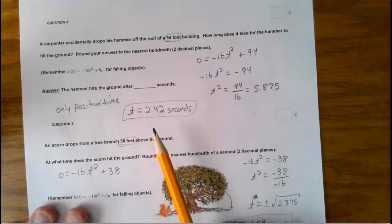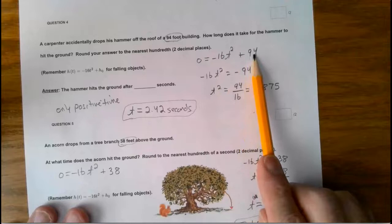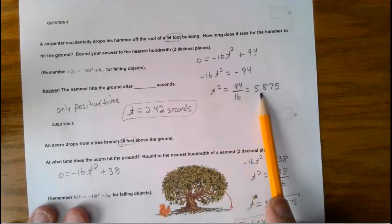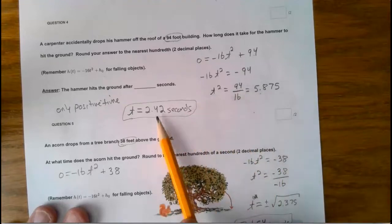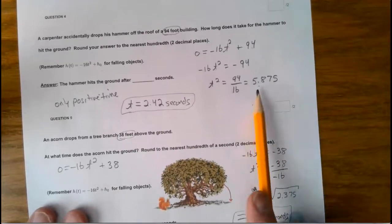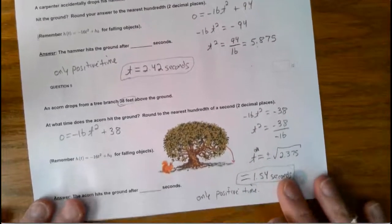So again, I just put in the 94 and solve for T. Took the square root of both sides, and this is what I got. 2.42 seconds. And only the positive one makes sense.